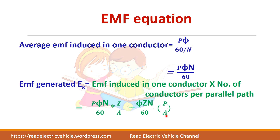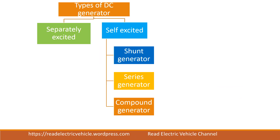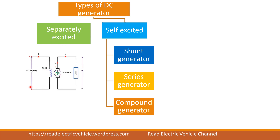Depending upon whether it is lap winding or wave winding, the value of A will change. You can substitute A equal to 2 for wave winding or A equal to P for lap winding. Now let us see about the different types of DC generator. Basically there are two types: separately excited generator and self-excited generator. Excitation means field. When the field is given a separate DC supply, we call it a separately excited generator. In self-excited generators, there is no separate supply for the field winding — the machine itself will supply the field. There are three types: shunt generator, series generator, and compound generator.